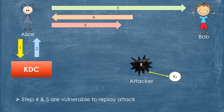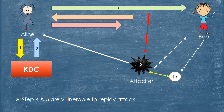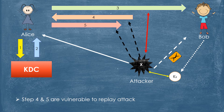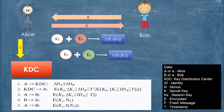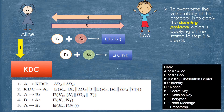An opponent X (attacker) has compromised an old session key. X has observed and recorded step 3. X can then impersonate Alice and trick Bob into using the old key by replaying step 3. If X can intercept the handshake message in step 4, it can impersonate Alice's response in step 5. X can then send false messages to Bob, which Bob thinks come from Alice, using an authenticated session key.